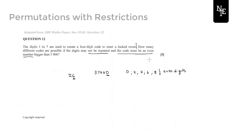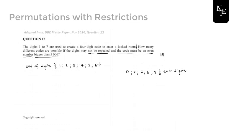Now the last restriction they put in is that our 4-digit code has to be a number bigger than 5000. So if it's bigger than 5000, it means that the first digit can only be numbers greater than or equal to 5. The set of digits we are given to work with is 1, 2, 3, 4, 5, 6 and 7 only. So if we want to create a code that is greater than 5000, it means that the first position can only take these 3 digits — so 5, 6 and 7.